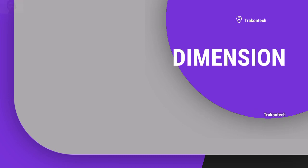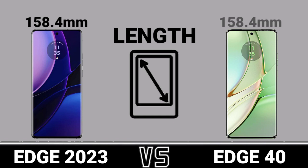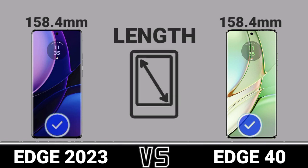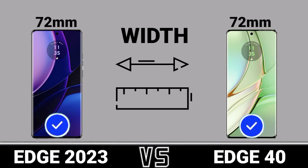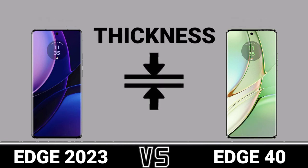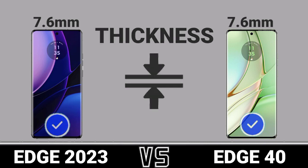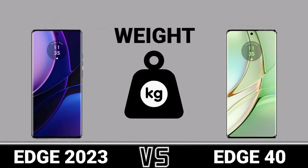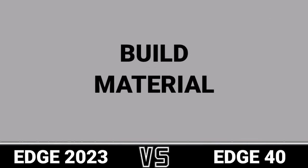Dimension: Length, Width, Thickness, Weight, Field Material.